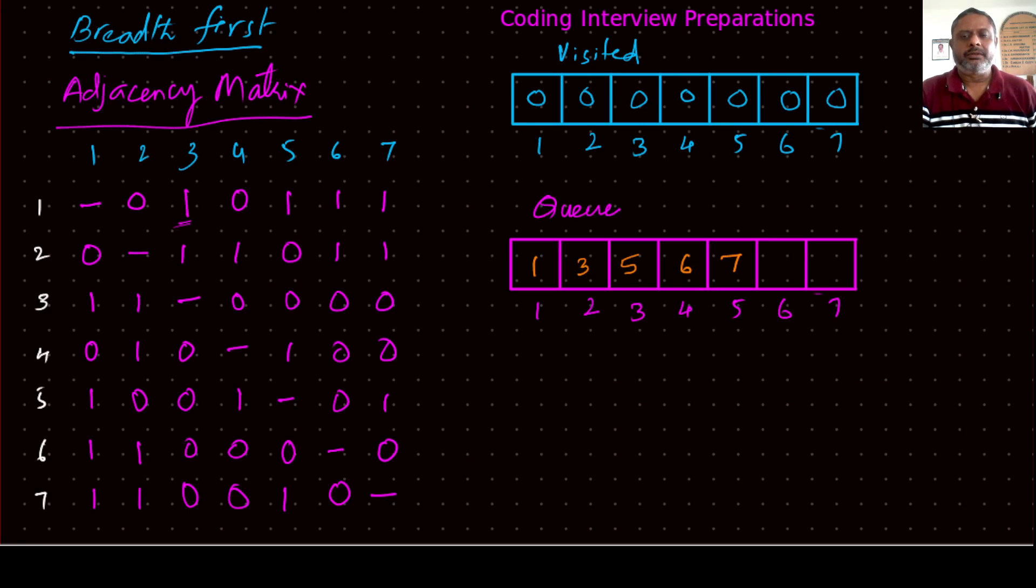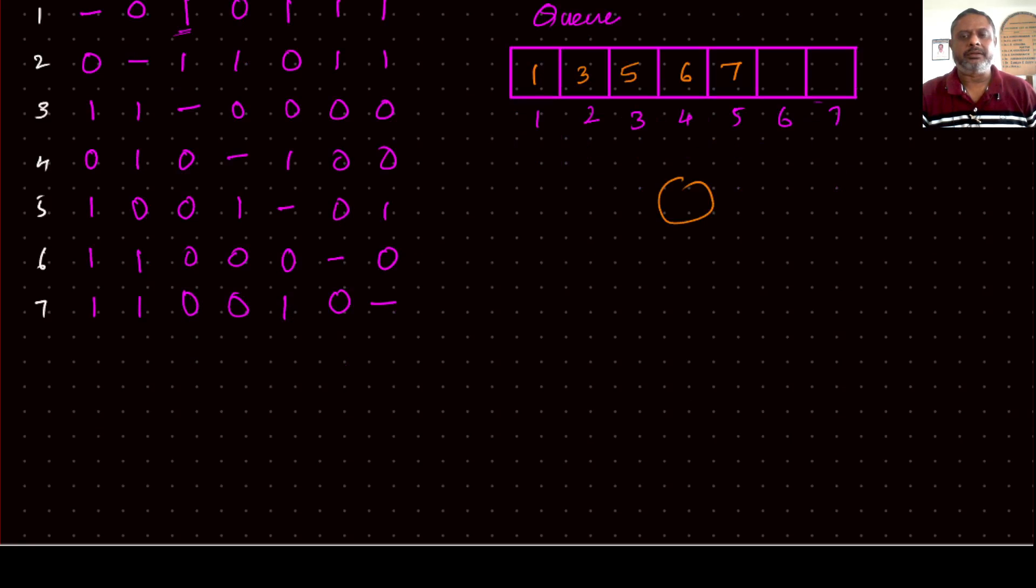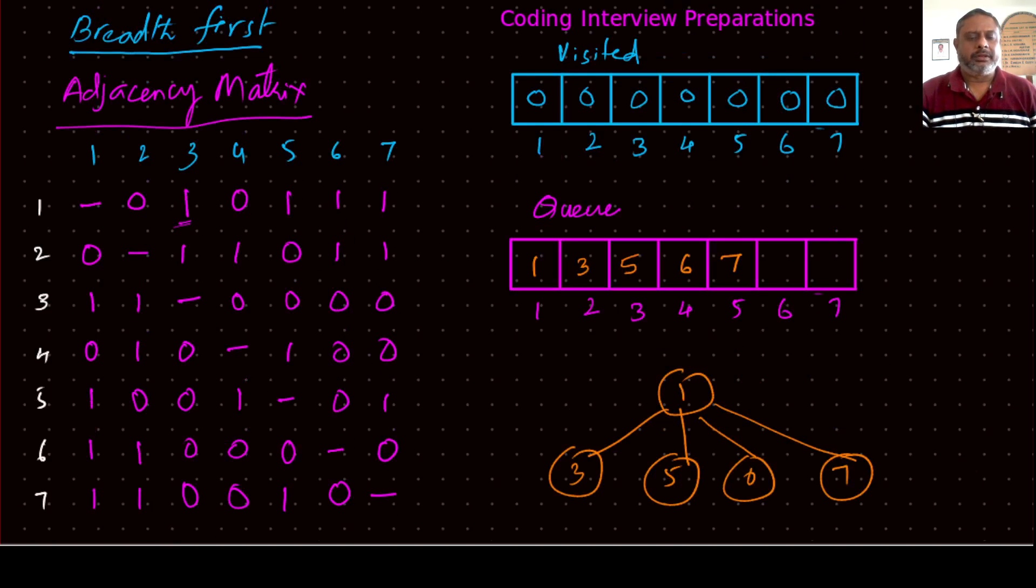So we have used three, five, six and seven, so it's equivalent to say that from one we have three, then we have five, then we have six, then we have seven. So all the adjacent nodes from one are added to the queue, so the work of one is over. So we dequeue one from the queue and make that the node one is visited.